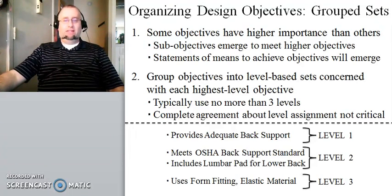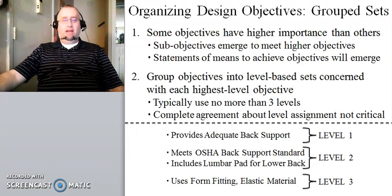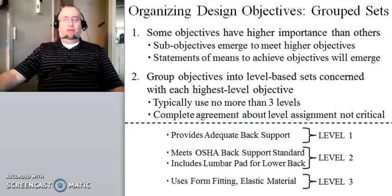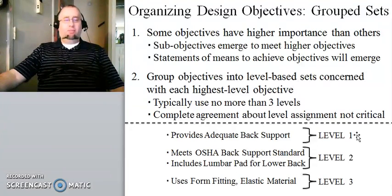Going back to the example of the chair — the client who wanted something to sit on — and addressing one of the customer needs: after a conversation with the client, we determined that the chair has to provide adequate back support. In additional discussion and also doing a review of literature on the purpose and function of chairs, we come up with a three-level hierarchy. The top level — what the customer told us — is that the chair has to provide adequate back support. That is the level one criterion in our grouped sets approach.